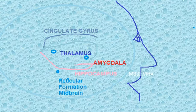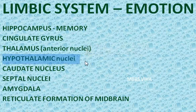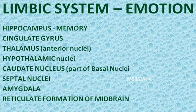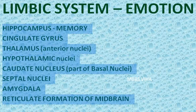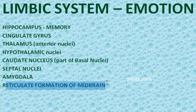What are the other parts of the limbic system? You have some nuclei of the thalamus, some nuclei of the hypothalamus, then you have the caudate nucleus from the basal nuclei — that is the new term — then you have the septal nuclei, the amygdala, and you have the reticular formation of the midbrain also.